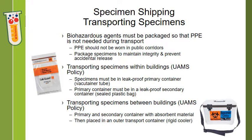For transporting specimens within buildings, your specimen must be in a leak-proof primary container — your vacutainer tube can serve as the primary container, just make sure the lid is on tight. The primary container must then be placed in a leak-proof secondary container, such as a sealed plastic biohazard bag. As long as it is well sealed, that is acceptable as a secondary container for transporting within the same building.